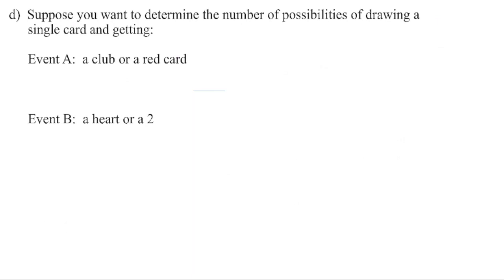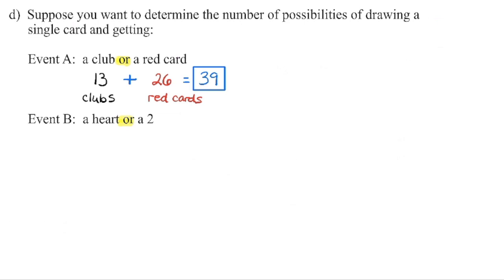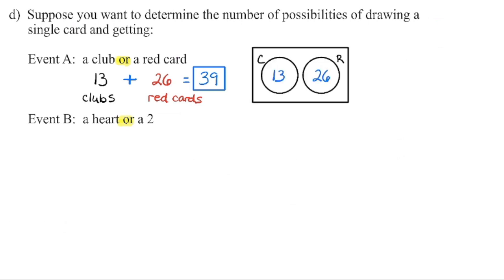We are going to draw one card and determine how many possibilities satisfy each event. Event A: drawing a club or a red card. The word 'or' means addition, so we cannot use the fundamental counting principle. There are 13 clubs and 26 red cards. There is no possibility that one card is both a club and a red card, since clubs are black — these are disjoint sets. So 13 plus 26 gives us 39 possibilities for Event A.